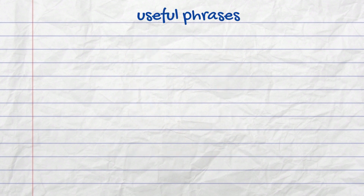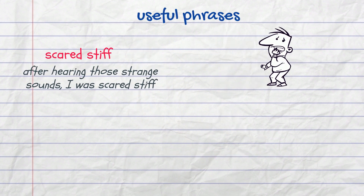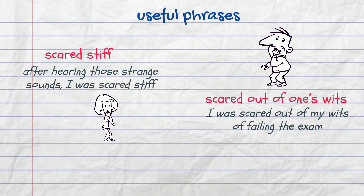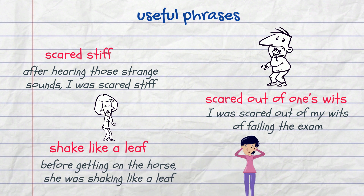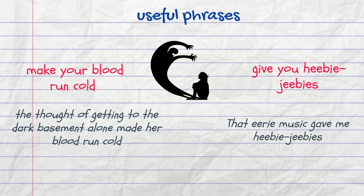Finally, here are some useful phrases to talk about fear. When someone is terrified or very scared, you can say they are 'scared stiff' — for example, 'After hearing those strange sounds, I was scared stiff.' Another phrase is 'scared out of one's wits' — 'I was scared out of my wits of failing the exam.' You can also say someone is 'shaking like a leaf' — 'Before getting on the horse, she was shaking like a leaf.' Something scary can 'make your blood run cold' or 'give you the heebie-jeebies' — 'The thought of going to the dark basement alone made her blood run cold'; 'That eerie music gave me the heebie-jeebies.'